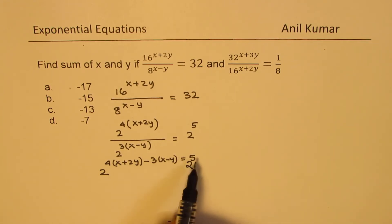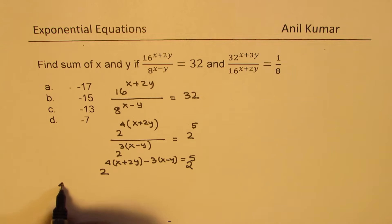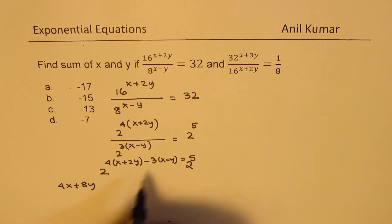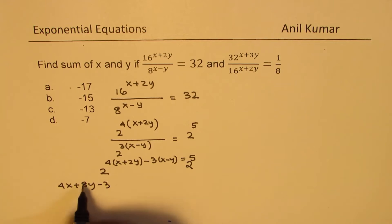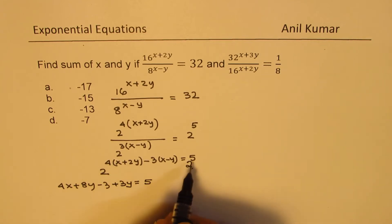Let me expand this. We get 4x plus 8y minus 3x plus 3y equals 5, right, the exponents of 2.